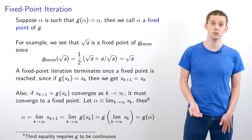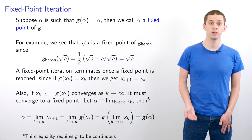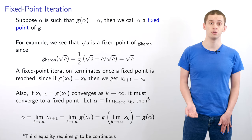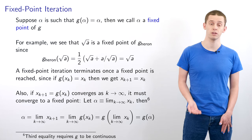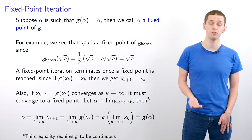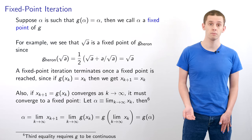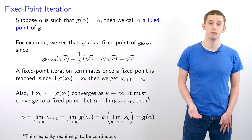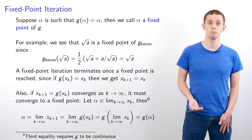Now suppose our iteration x_{k+1} = g(x_k) converges as k tends to infinity, and also suppose that g is continuous; then it must converge to a fixed point. Let α = lim_{k→∞} x_k. Then α = lim_{k→∞} x_{k+1} = lim_{k→∞} g(x_k) = g(lim_{k→∞} x_k) = g(α), so this limit must be a fixed point.